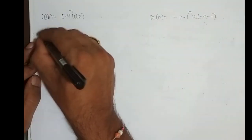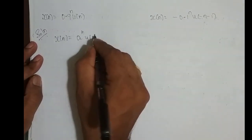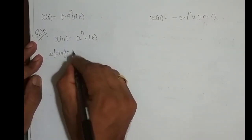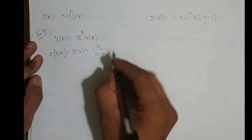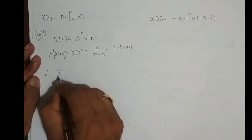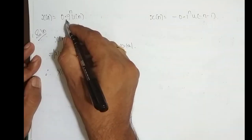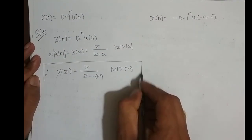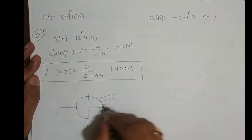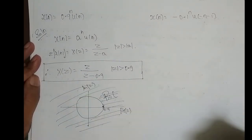Next sequence: X(n) = (0.9)^n u(n). This is of the form a^n u(n), which is an infinite length right-sided sequence. The Z-transform of a^n u(n) is Z divided by (Z minus a), with ROC: magnitude of Z greater than magnitude of a. So X(Z) = Z divided by (Z minus 0.9), ROC: magnitude of Z greater than 0.9. The pole is at 0.9, and the ROC is outside the circle of radius 0.9 in the Z-plane.